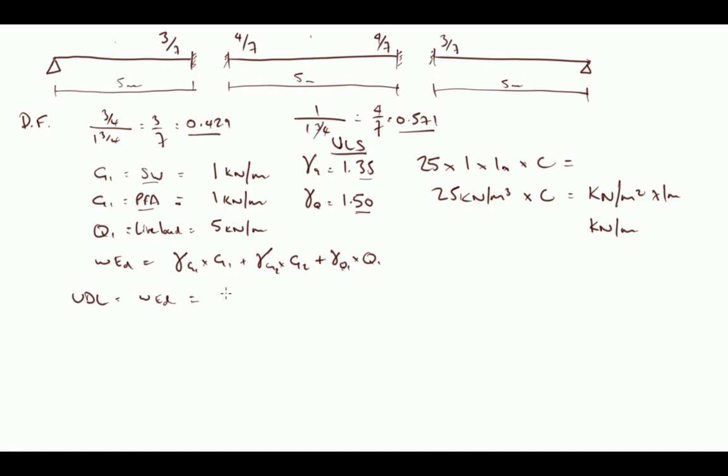For our example then, we are going to use a UDL of w at design. That will be 1.35 times 1 plus 1.35 times 1, G1 and G2 times G2, our permanent finishes action, which again is 1, and then plus our gamma q, 1.5 multiplied by our live load variable action of 5. So that gives us a total of 2.7 for our permanent actions, plus 1.5 times 5, 7.5 kilonewtons, which gives us a total of 10.2 kilonewtons per meter run.